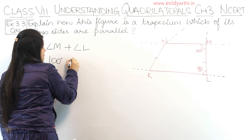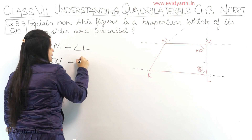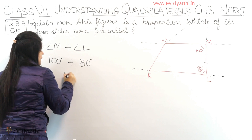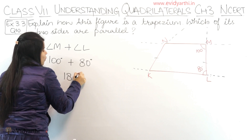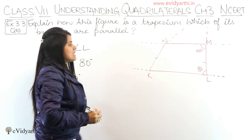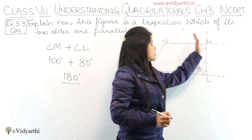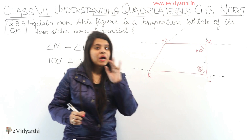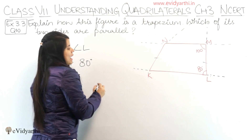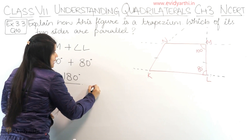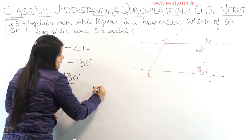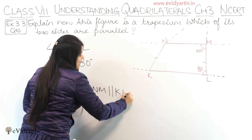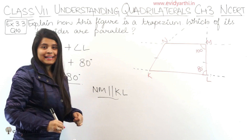Angle M is 100 degrees, plus angle L which is 80 degrees. So 100 plus 80 is 180 degrees. We can see that the transversal's co-interior angle sum is 180 degrees. So we can write that NM is parallel to KL.